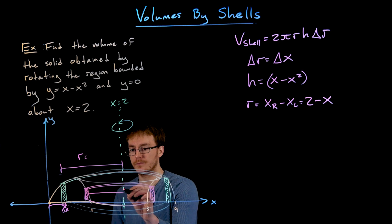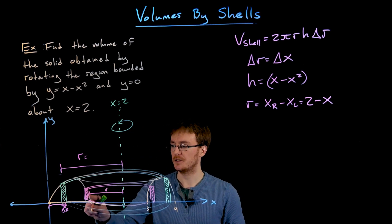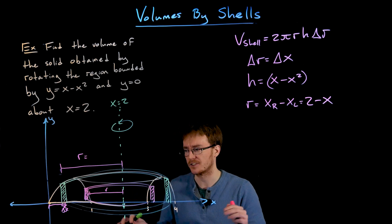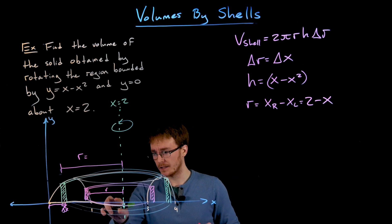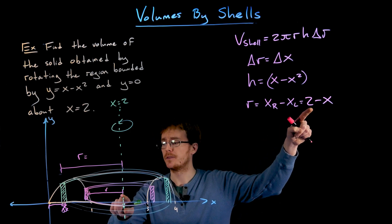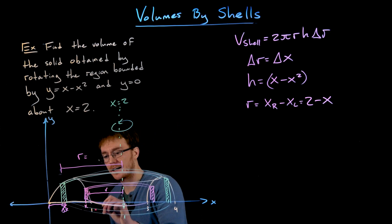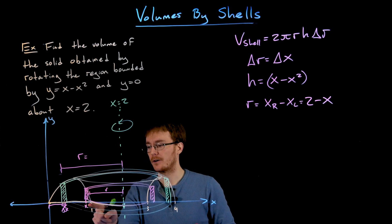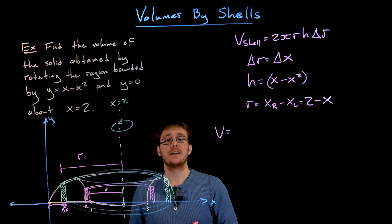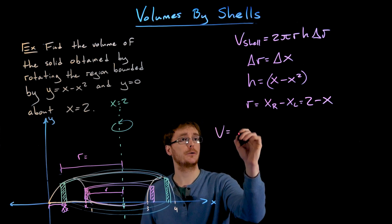Drawing a second approximating rectangle confirms this: the radius is always the distance from the axis of rotation to the edge of the shell. The rightmost x value is still 2, but the leftmost x value changes as we move throughout our interval from 0 to 1. So we've now found all three components needed for the cylindrical shell method and are ready to set up the definite integral.